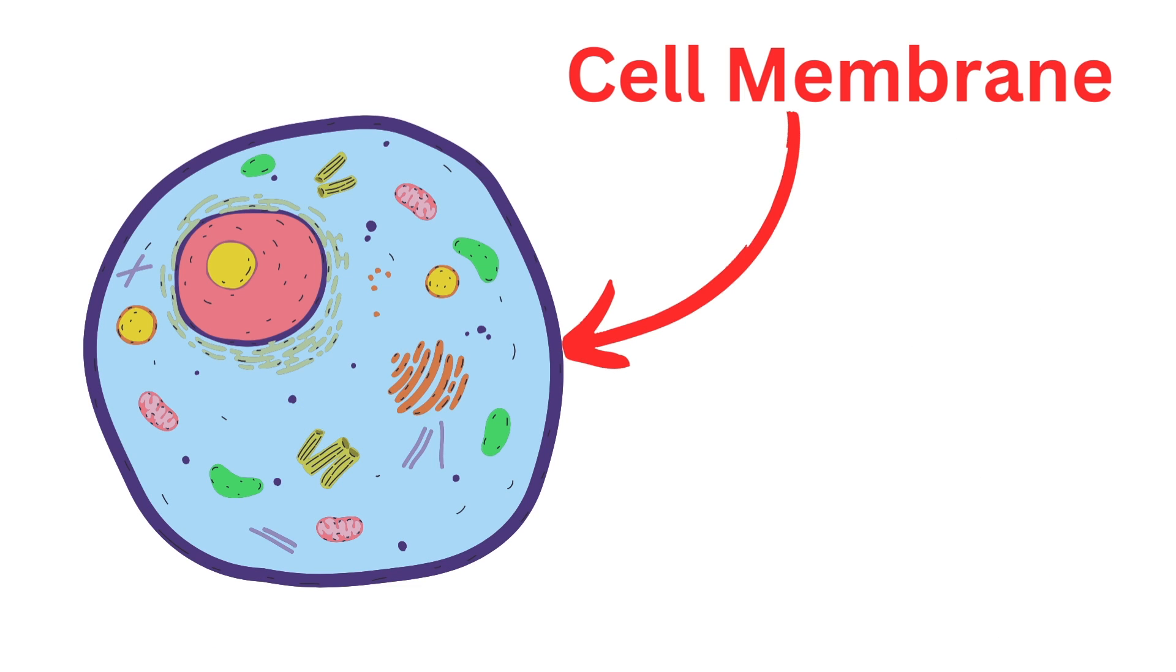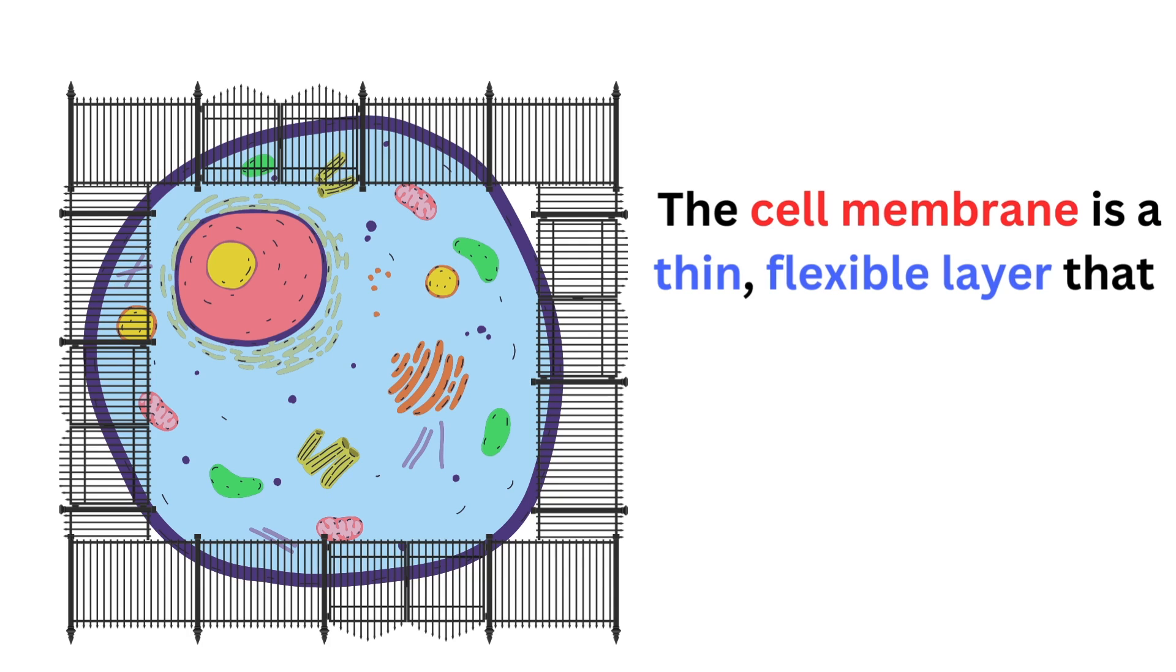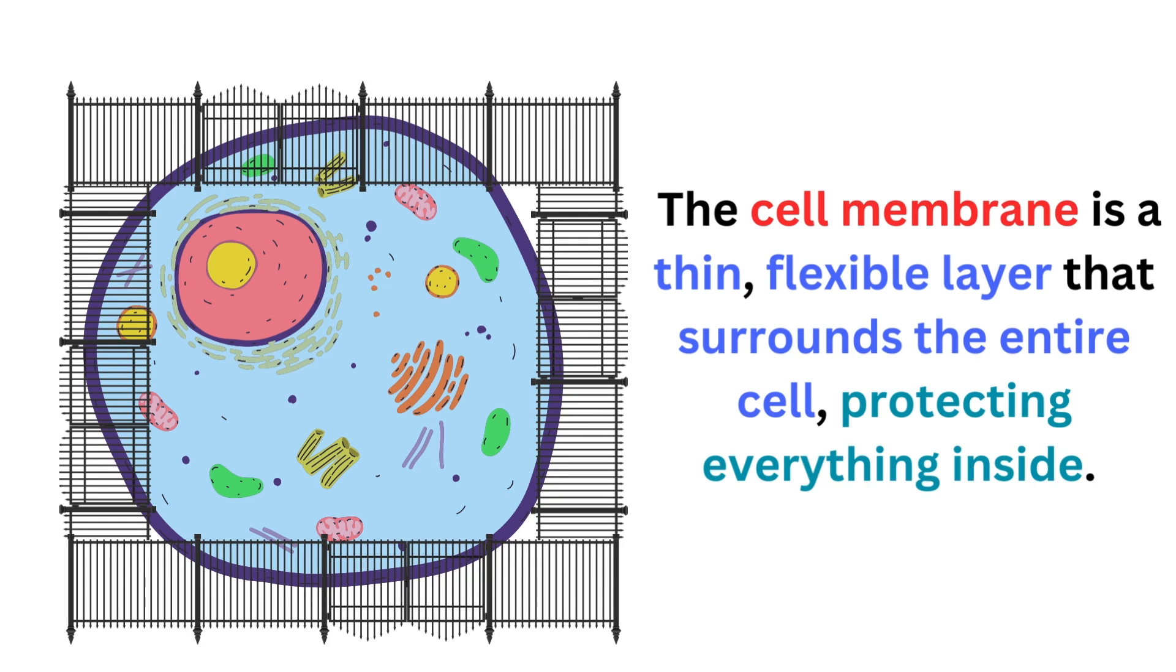Think of the cell membrane as the security gate around a cell. It's a thin, flexible layer that surrounds the entire cell, protecting everything inside.